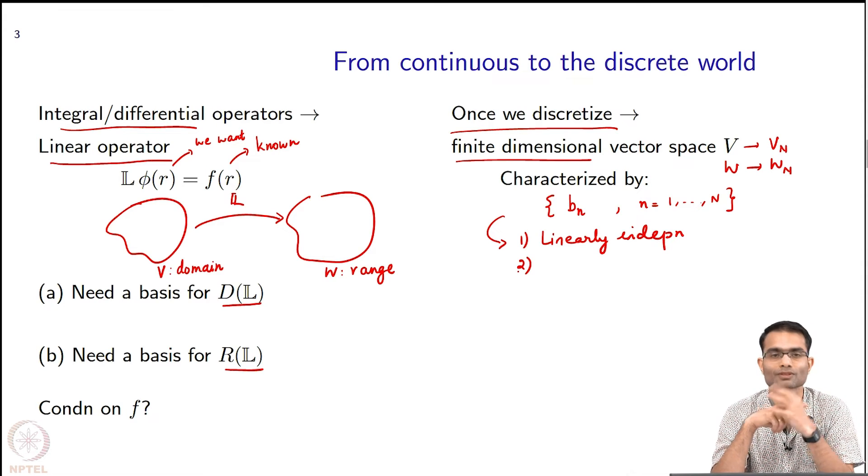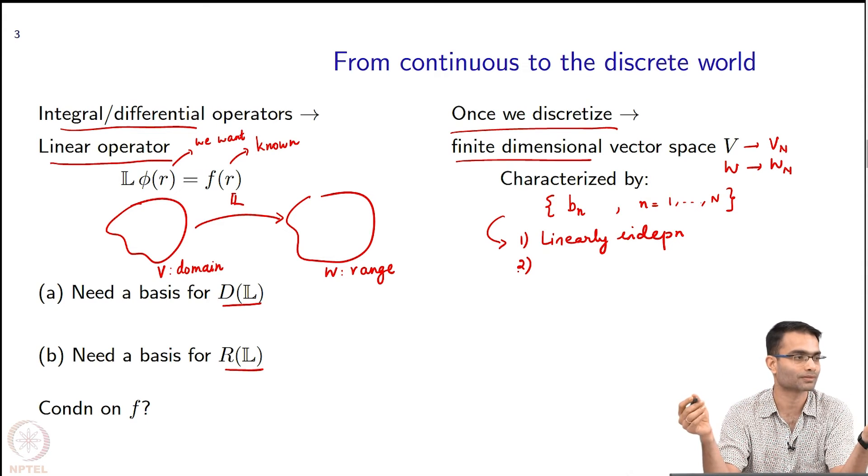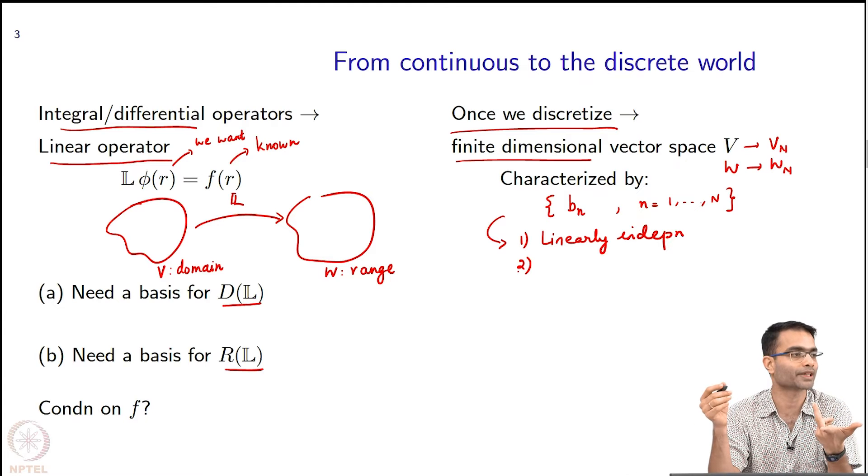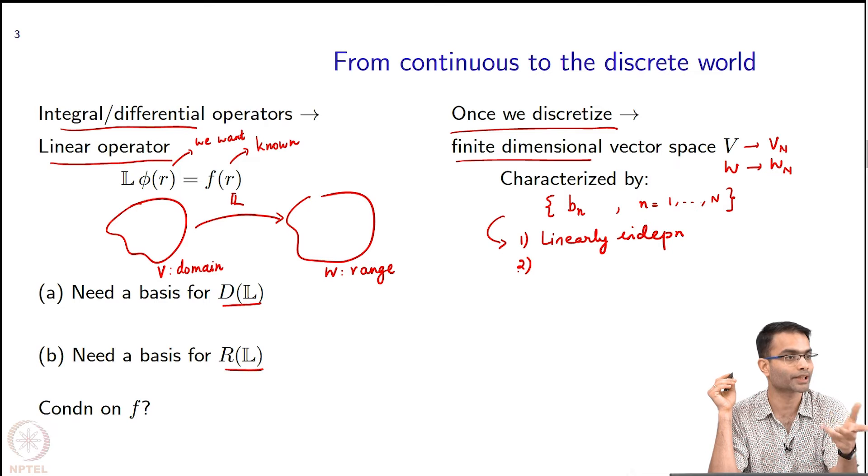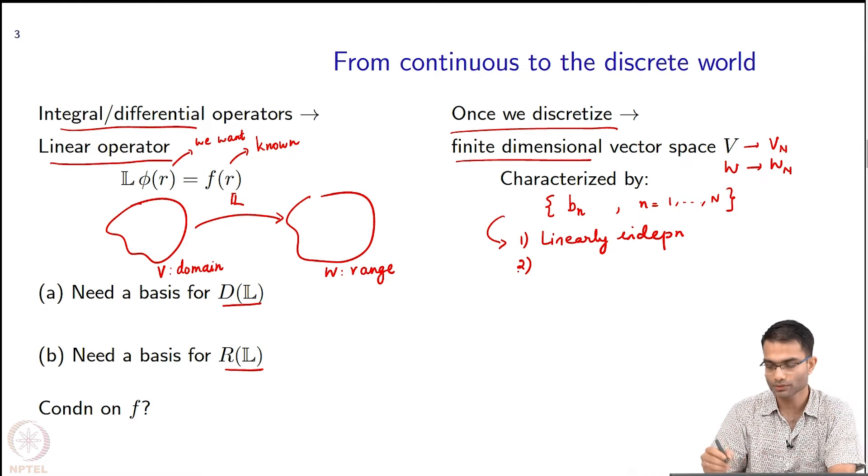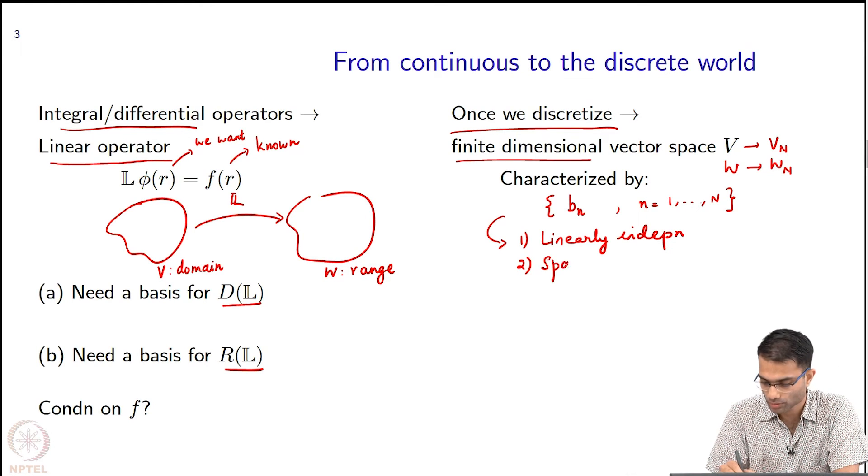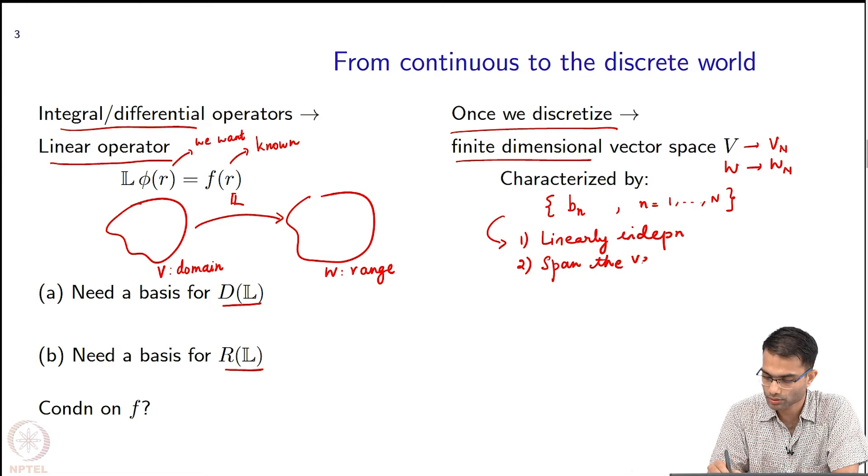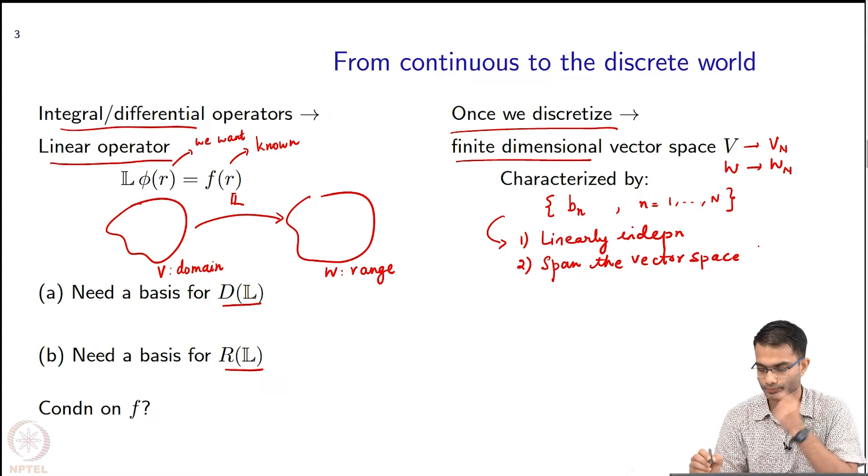They should span the whole vector space, right? So for example, if I give you 3-dimensional space, x vector and y vector, they are linearly independent, but they do not span 3-dimensional space. So these vectors put together should span the vector space. Basis.